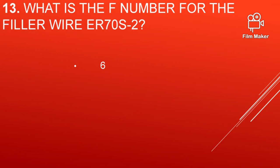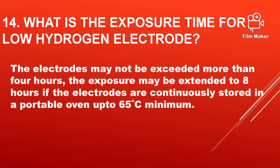What is the F number for the filler wire ER70S2? That is for the bare electrode. The F number for the bare electrode is 6. Normally all bare electrodes for ferrous material will have the F number 6.